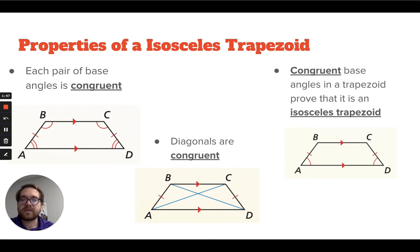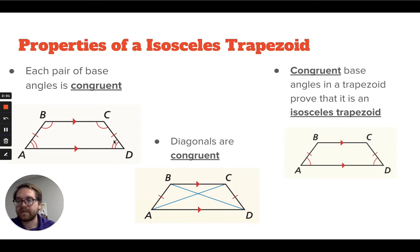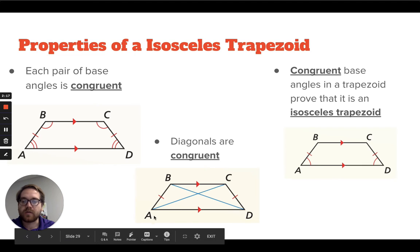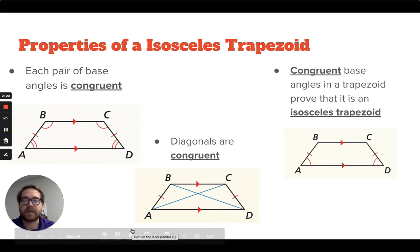The properties of an isosceles trapezoid: first, each pair of base angles is congruent. So if you have an isosceles trapezoid with parallel bases and congruent legs, the base angles are going to be congruent. The two bottom angles at A and D are congruent to each other, and the top two at B and C are congruent to each other. Another property is that the diagonals are congruent — the lengths of the diagonals will be congruent to each other.